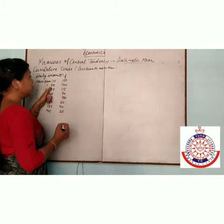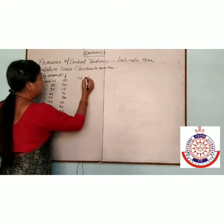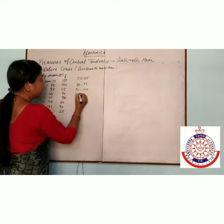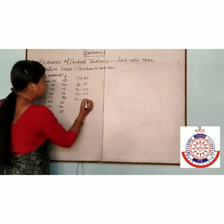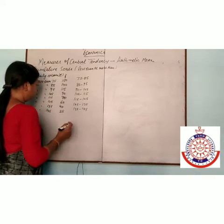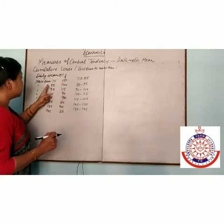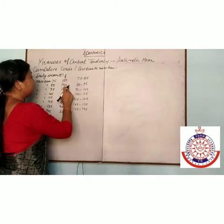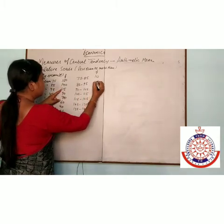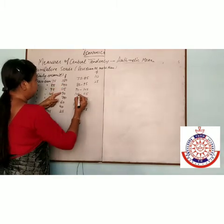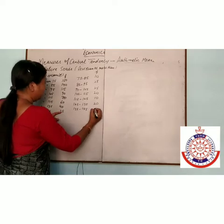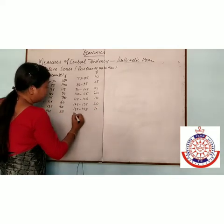Here, more than 75, more than 85 — so the first interval is 75–85. Continuing with difference of 10: up to 105–115, 115–125, and 135–145. More than 75 minus more than 85 gives frequency = 10. Then 140 − 115 = 25, then again 25, then 20, then 10, then 20, then 15.